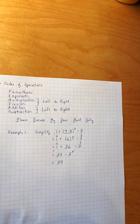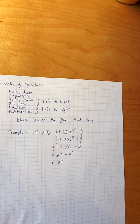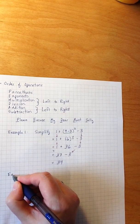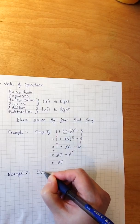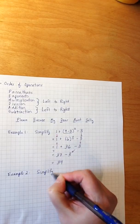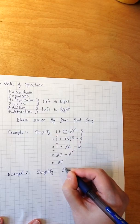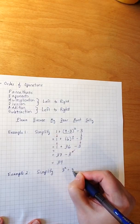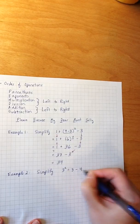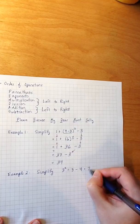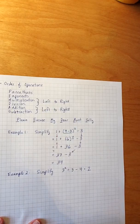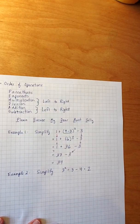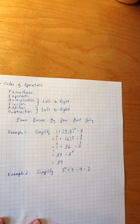Let's look at a second example. Simplify 3 squared divided by 3 minus 4 times 2. So again, I start asking myself, do I have any parentheses and can I simplify inside those parentheses? In this case, I have no parentheses, so there's nothing to simplify.